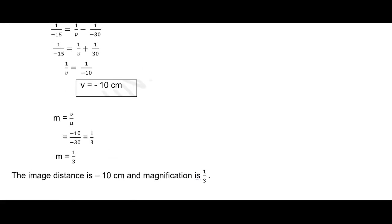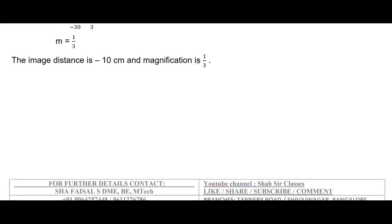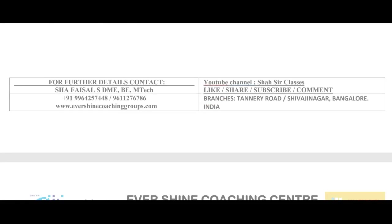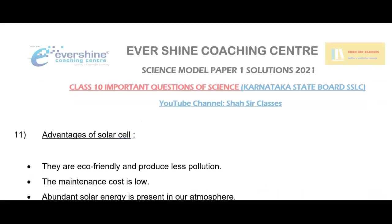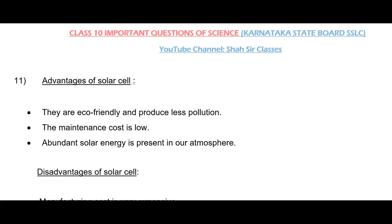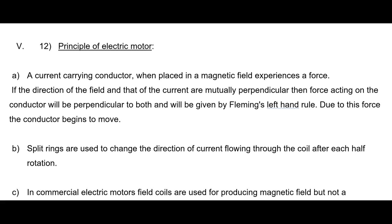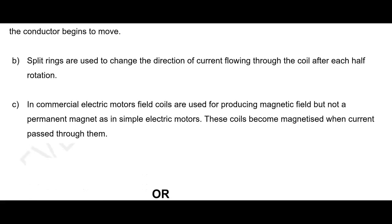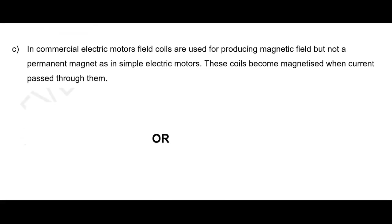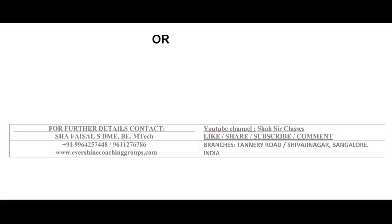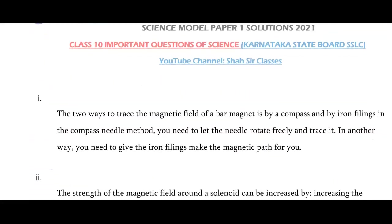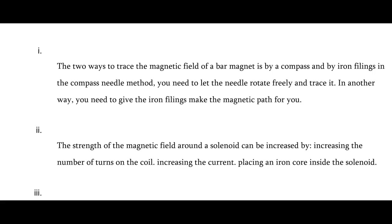And we have done the image distance and we have calculated here. This is question number 11 — advantages of solar cell and disadvantages of solar cell. This is the principle of electric motor. This is the principle of electric motor and why split rings are used and what is the difference between your commercial motor and simple electric motor — or there is a choice here. We have solved even the choice questions in this, from your magnetic effect of electric current.